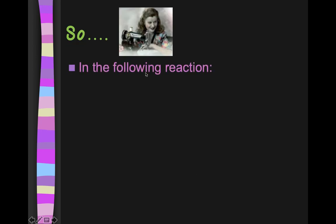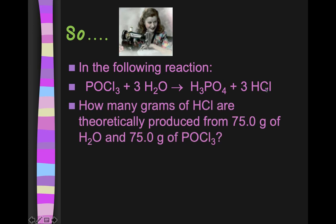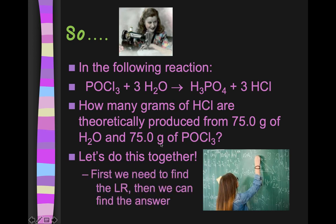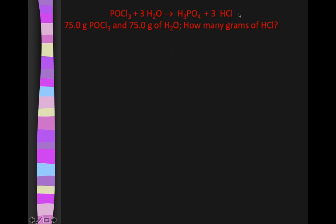So imagine we were doing this following reaction: POCl3 plus 3 moles of water produces 1 mole of H3PO4 plus 3 moles of HCl. Maybe you remember this reaction before, we used it when we learned about limiting reactants. This time, though, I'm asking you how many grams of HCl are theoretically produced from 75 grams of water and 75 grams of POCl3. First of all, you might notice, wait a second, this is an LR problem. There's two givens. So first we're going to do an LR problem, and then we can answer this question and then we'll turn this into a percent yield problem. So here we go.